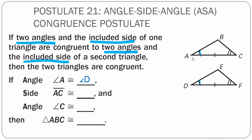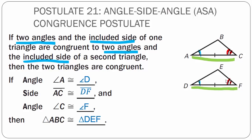Line segment AC is congruent to line segment DF because they have one tick mark. And angle C, which has two tick marks, is congruent to angle F because it also has two tick marks. So I have an angle, a side between the two angles, and another angle — congruent to an angle, a side between the two angles, and another angle. Therefore, triangle ABC is congruent to triangle DEF using the Angle-Side-Angle Congruence Postulate.